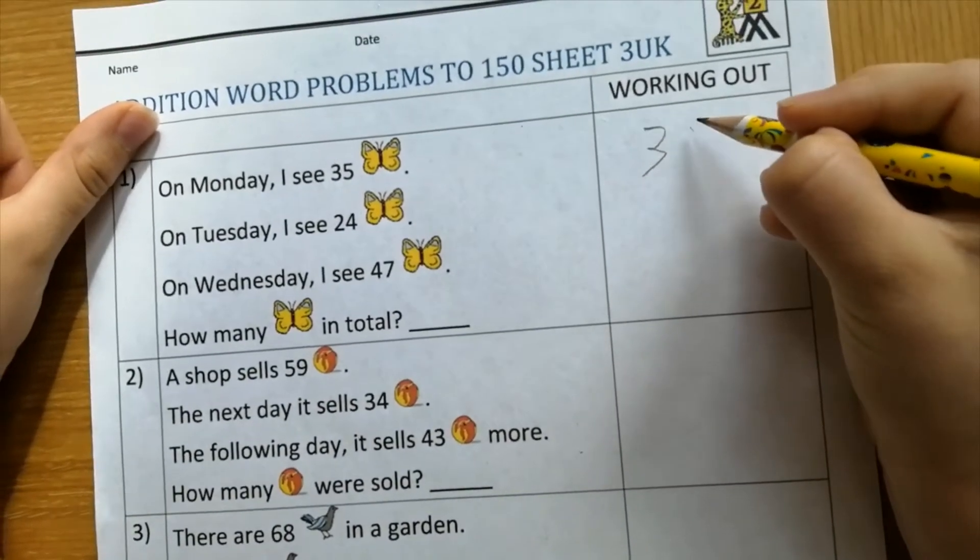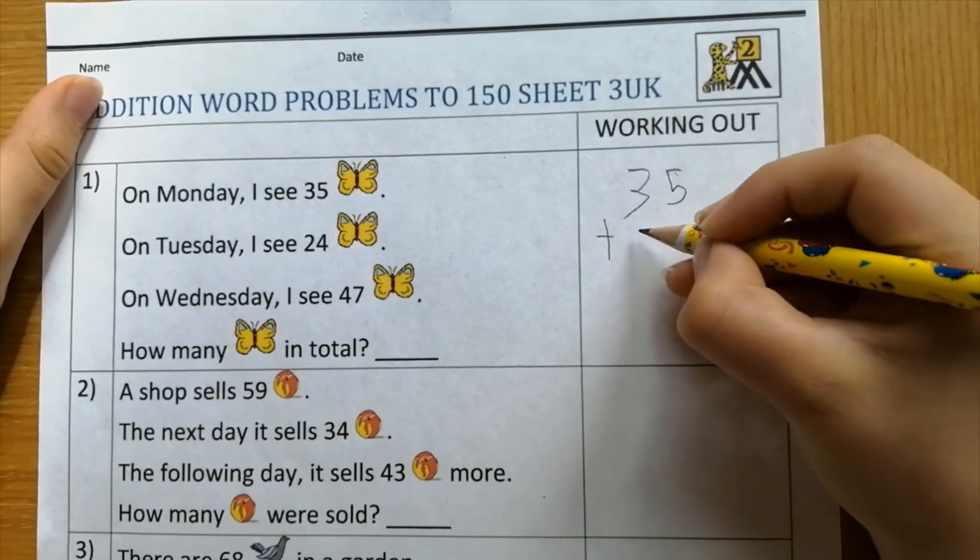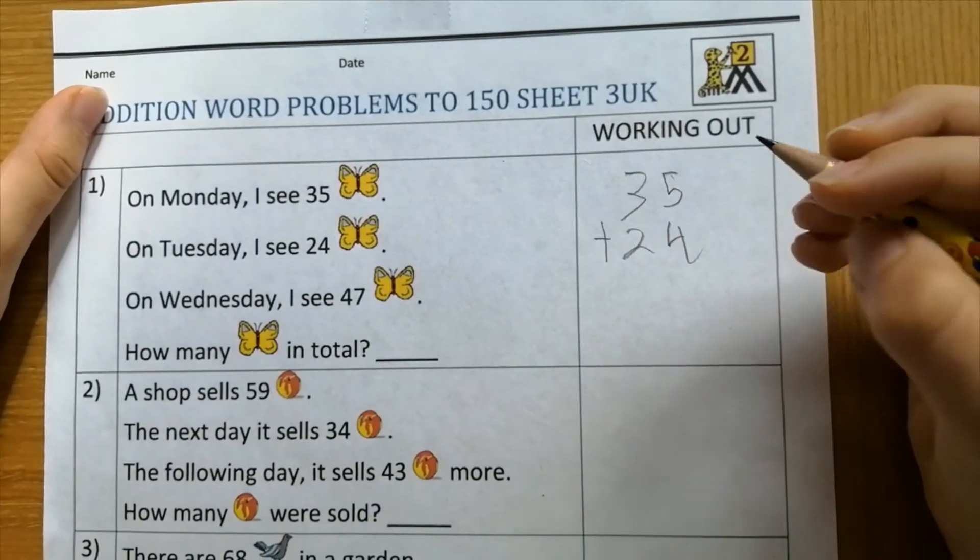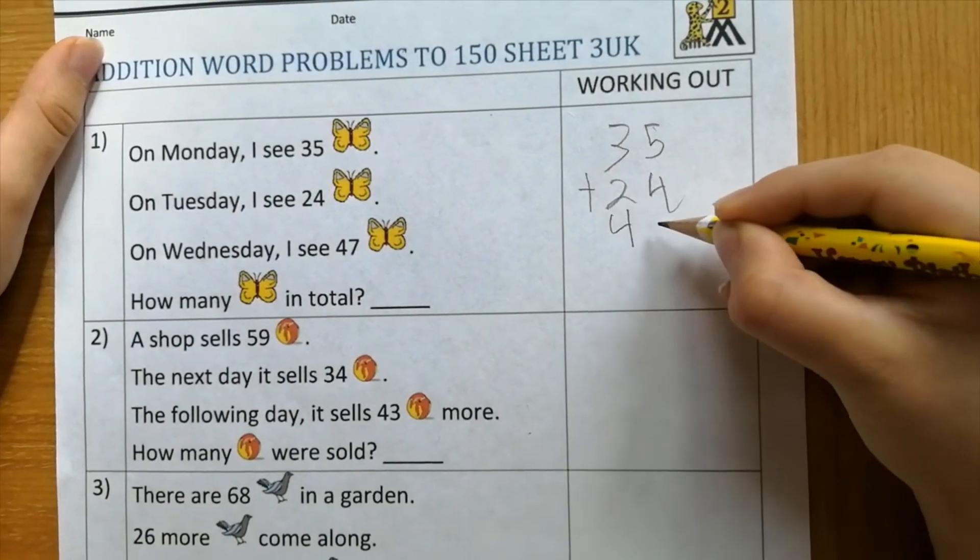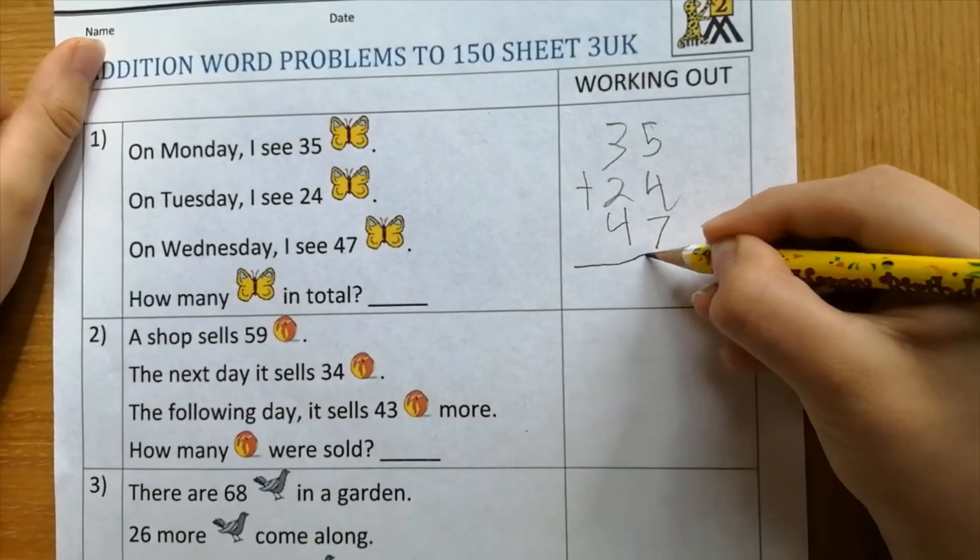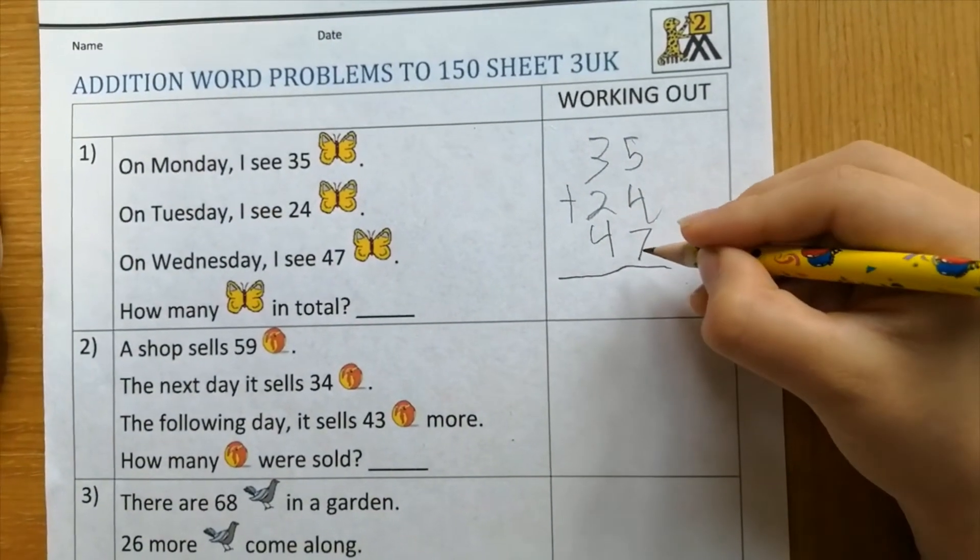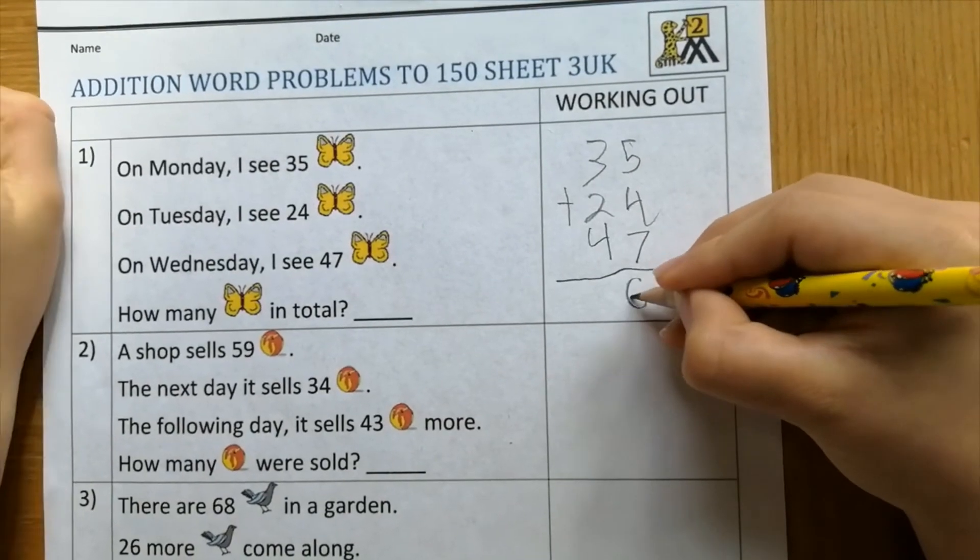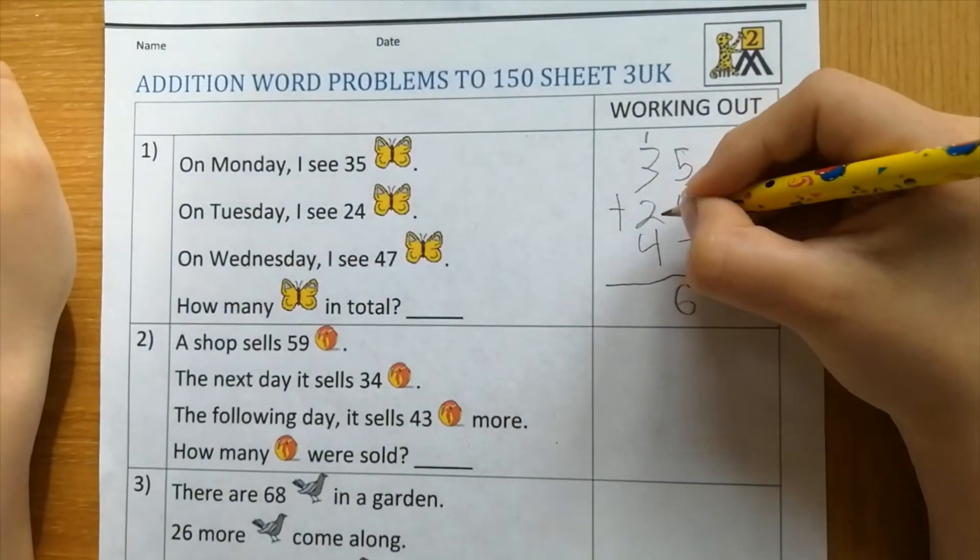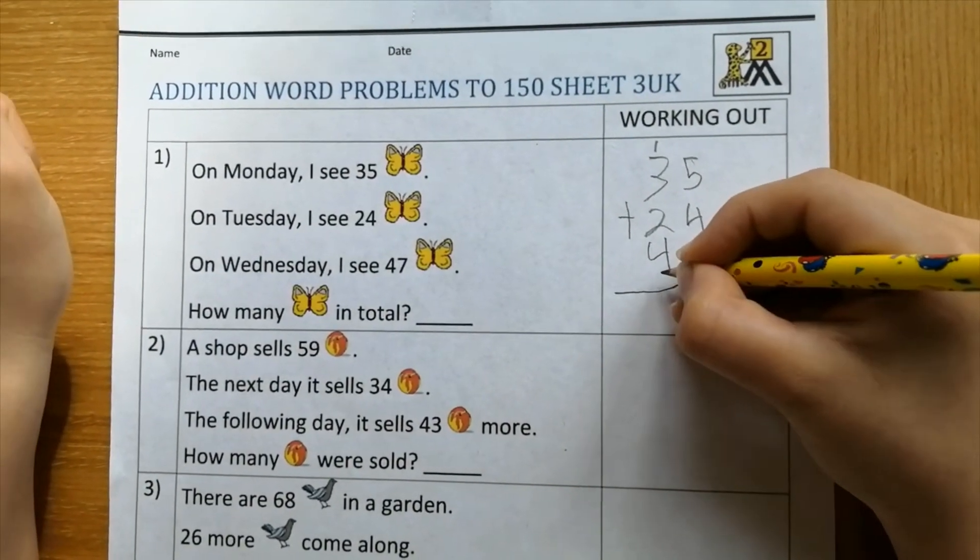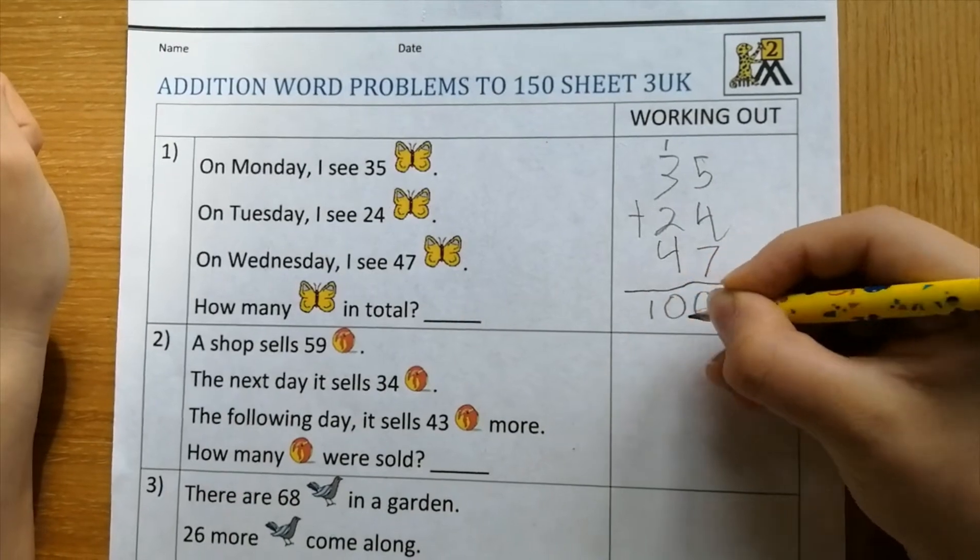So it's thirty-five plus twenty-four plus forty-seven equals. Five plus four is nine plus seven is sixteen. One plus three is four plus two is six plus four is ten. So it's a hundred and six.